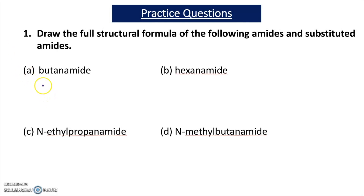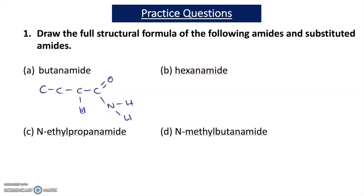Question 1A asks you to draw the full structural formula of butanamide. We would have four carbons in our chain with a C=O NH2 functional group. Fitting the hydrogens in gives us: CH3 bonded to CH2, bonded to CH2, bonded to C=O NH2. That is the full structural formula of butanamide.